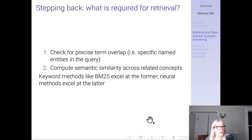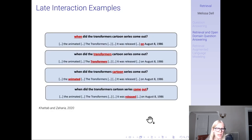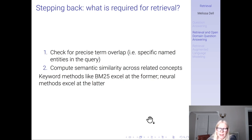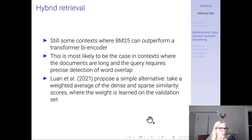Stepping back, what is required for retrieval? On one hand, we might want to check for precise term overlap — specific named entities in the query that appear in the passage that answers it. On the other hand, we also want to compute semantic similarity across related concepts — caring that 'comes out' is another way to say 'released.' Keyword methods like BM25 excel at the former, while neural methods really excel at the latter.